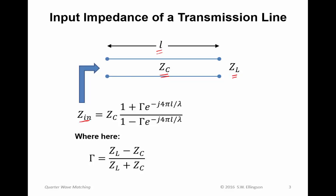we find that the input impedance is given by this expression, where lambda is the wavelength in the transmission line, and gamma is the reflection coefficient at this point. So gamma is given by Z sub L minus Z sub C, Z sub L plus Z sub C.